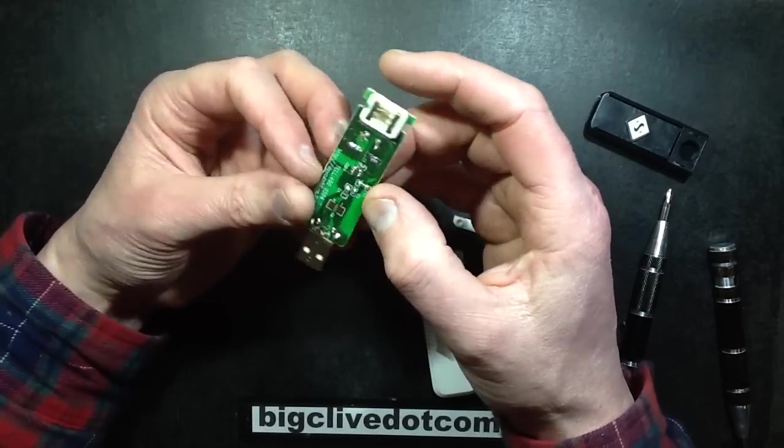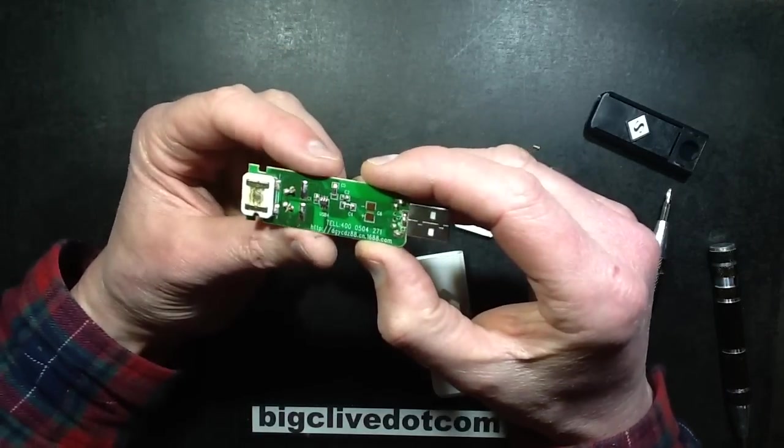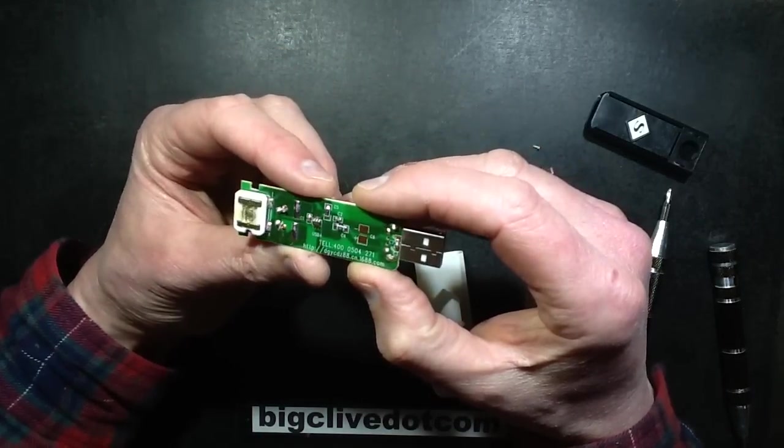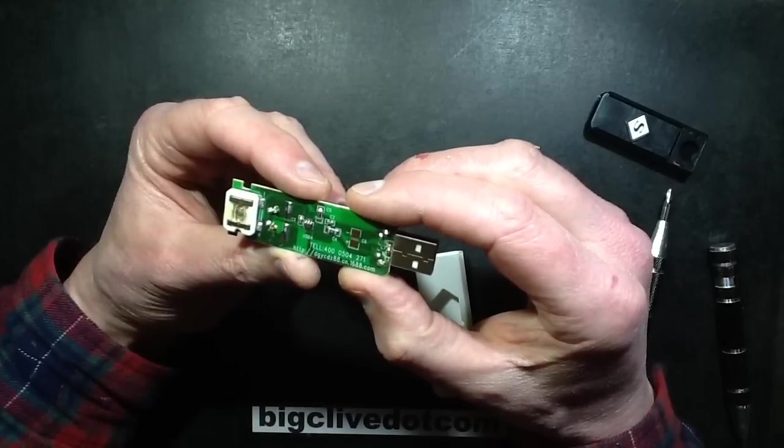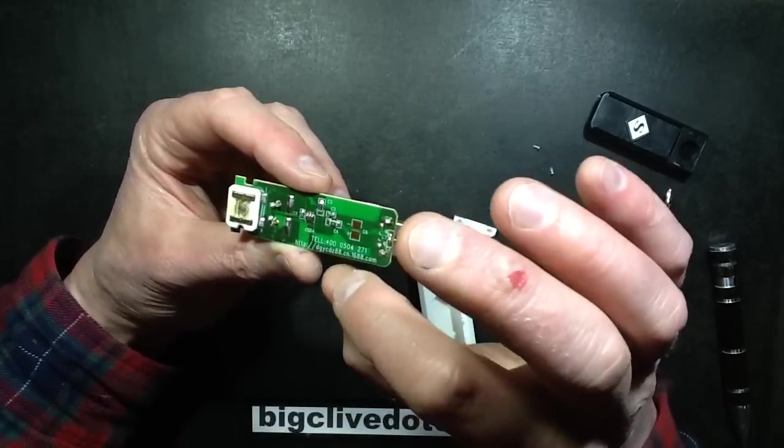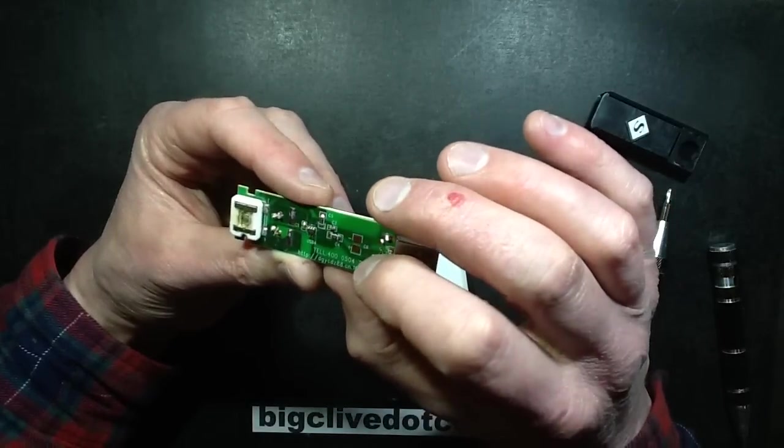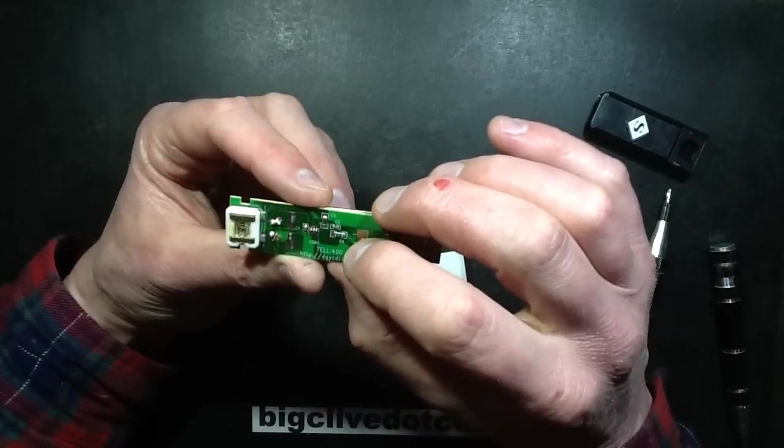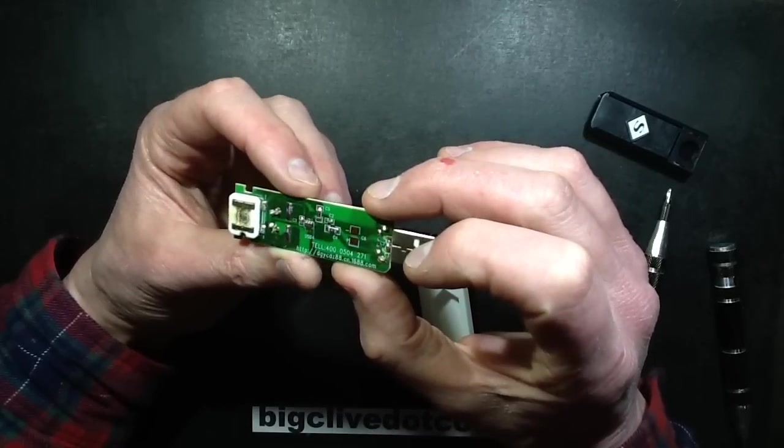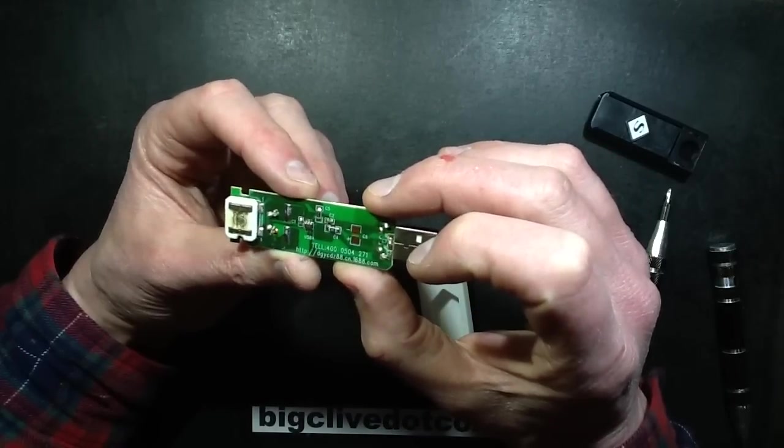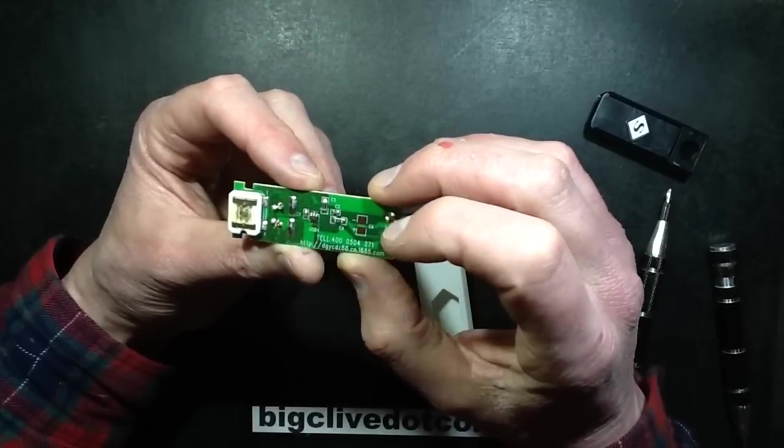It's got a tiny little chip in the bottom, a 6 pin chip which I'm guessing is pretty much doing everything. Because the rest are just capacitors. There's just 3 capacitors, they're all marked C2, 4 and 5.